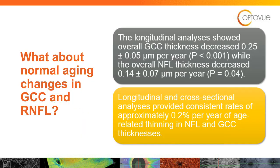What about normal aging changes? In just normal aging, how much change can we expect? A good study showed that the ganglion cell complex decreases about a quarter micron per year, whereas the nerve fiber layer decreases about 0.14 microns per year. Anything above that will often get flagged as statistically significant. Another way to think about it: we lose about 0.2% per year of age-related thinning in nerve fiber layer and ganglion cell complex.